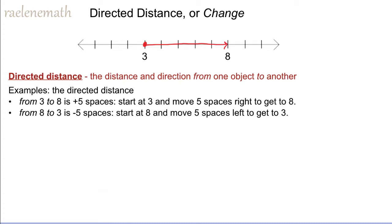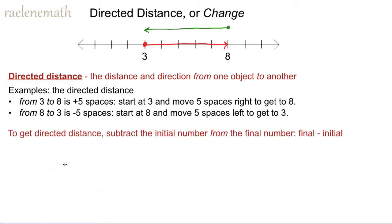Similarly, to work out the directed distance from eight to three, we start at the initial position of eight and we move towards the final position of three. We are still moving a distance of five spaces, but we're moving to the left, and we recognize that the directed distance is negative five. So there's one calculation for the directed distance depending on where you begin and where you end. The beginning number where we start from is the initial value and where we are going to is the final value. Therefore, the directed distance is the final minus the initial.